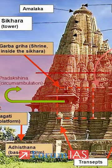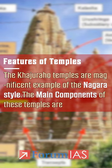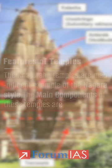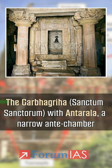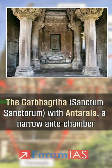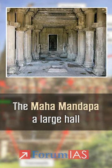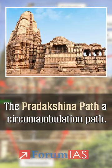The Khajuraho temples are a magnificent example of Nagara style. The main components of these temples are the Garbhgriha — Sanctum Sanctorum with antral, a narrow antechamber — the Mahamandap, a large hall, the Ardhamandap and Mandap, which are smaller additional halls, and the pradakshina path, a circumambulation path.